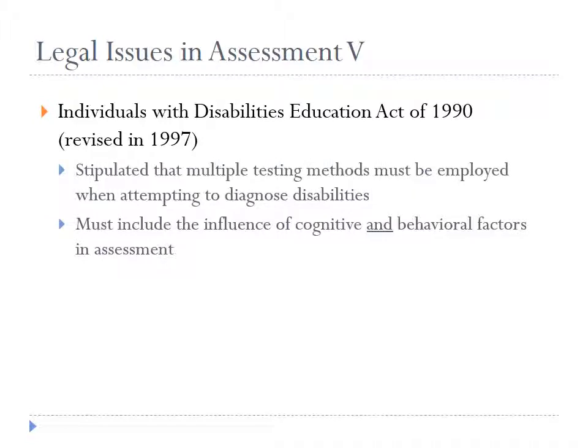A final federal act we could look at is the Individuals with Disabilities Education Act, IDEA. Initially passed in 1990 and revised in 1997, IDEA stipulates that multiple testing methods should be used when diagnosing disabilities — no single piece of data should be the sole reason an individual is diagnosed. It should be a decision that is corroborated or triangulated using multiple pieces of data. In addition, counselors need to consider both cognitive and behavioral factors or deficits in their assessment, and an individual must have impairment in both areas to meet criteria for diagnosis.